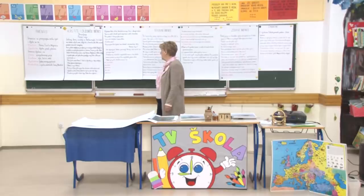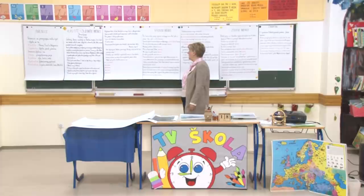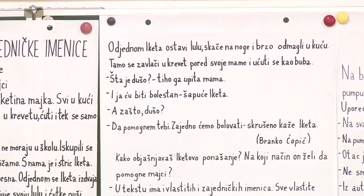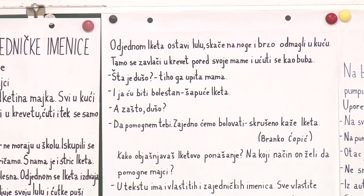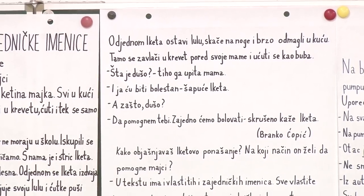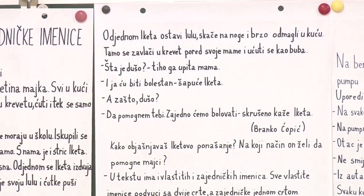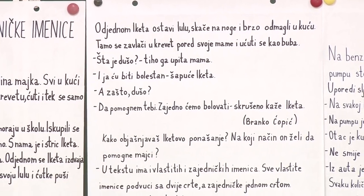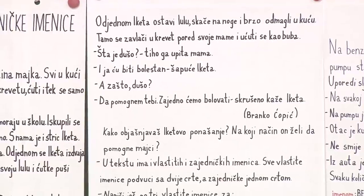Odjednom se Iket izdvaja iz gomile, sjeda pod jedno drvo, pripaljuje svoju lulu i čutke puši zureći preda se. Šta li je to našem Iket-u? Čudi se Joja Parip. A Veja ozbiljno tihim glasom objašnjava: Mama mu bolesna. Pa on je čitavo jutro igrao kao da nema ništa novo, a sad odjednom postao tužan. Kako to? - još više se čudi Joja. Pa sad se prisjetio, kaže Veja.